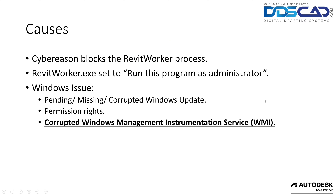So what might be causing these errors? This list is actually from Autodesk — they have a Knowledge Network article that refers to all of this and has most of the information we're going to be covering today. You will see links for that both in the blog post we create as well as in the description for the video. Some of the common reasons are either a CyberReason block of the Revit worker process, a Revit worker.exe file being set to run as administrator, or Windows issues — which is the more common side of things.